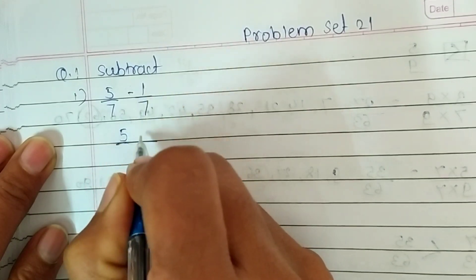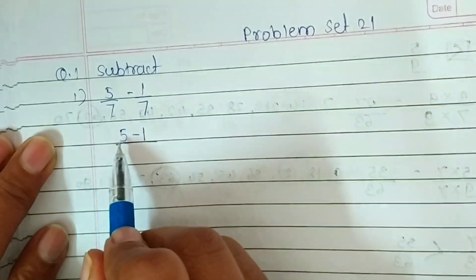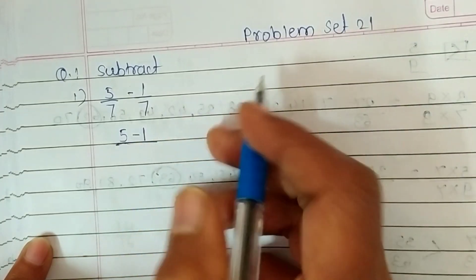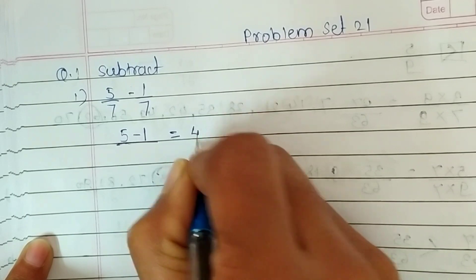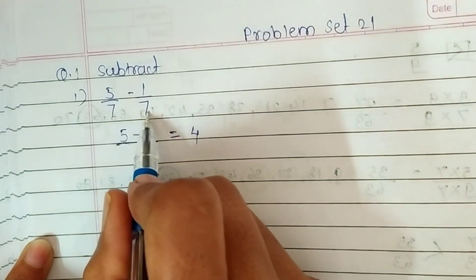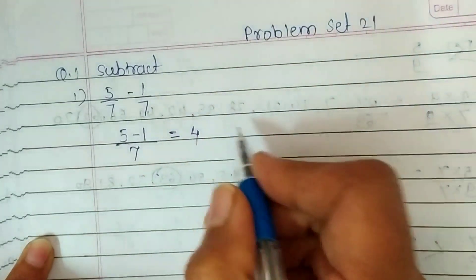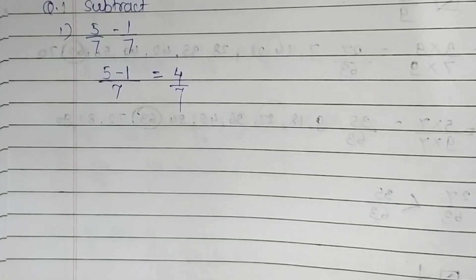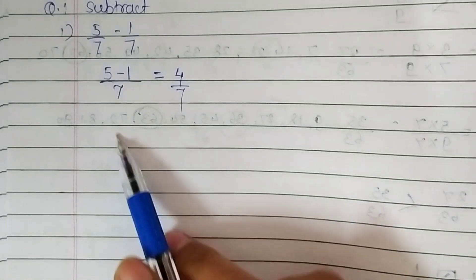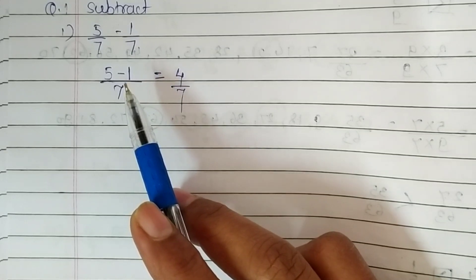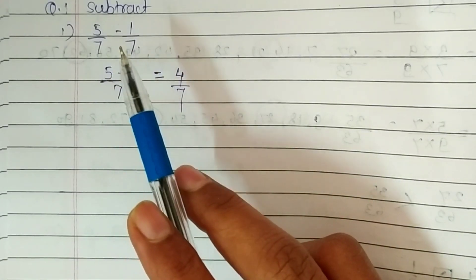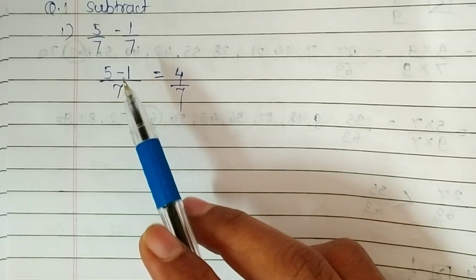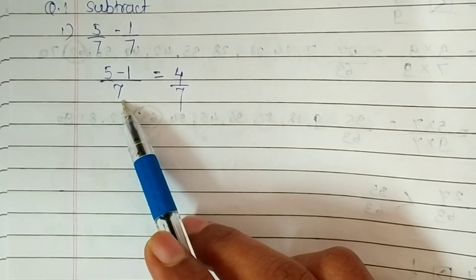Numerators are 5 and 1. We have to subtract them and find the difference between the two numerators. 5 minus 1 is equal to 4. So just write their denominators as a common denominator — 7. Remember: while subtracting two like fractions, just ignore their denominators, find the difference between the numerators, and write their denominator as the common denominator in your answer.